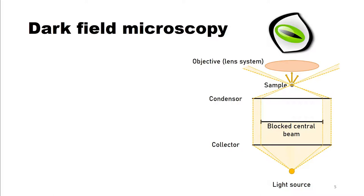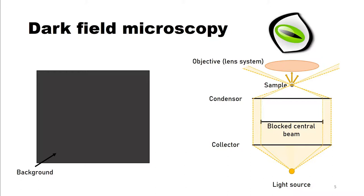That excludes light which was not scattered by the sample, or in other words, light from the surrounding is excluded. That is why in this case the background appears dark while the sample appears bright.